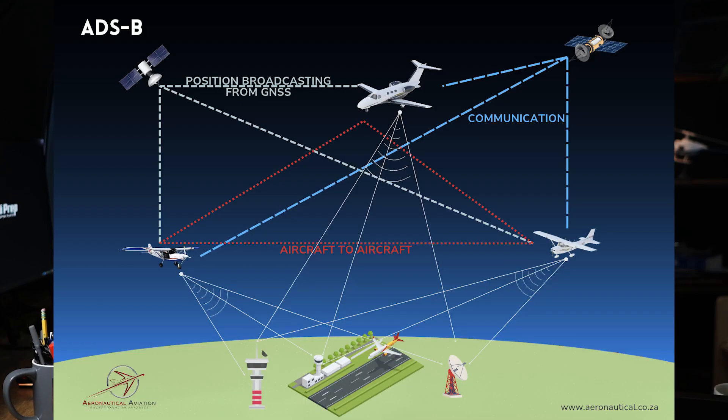With ADS-B Out, ATC and nearby aircraft are constantly aware of an aircraft's position, reducing the risk of mid-air collisions. ADS-B In users benefit from receiving real-time weather and traffic information, which was previously only available through a subscription-based service. ADS-B is becoming a global standard for surveillance, enhancing the safety and efficiency of air travel throughout the world.